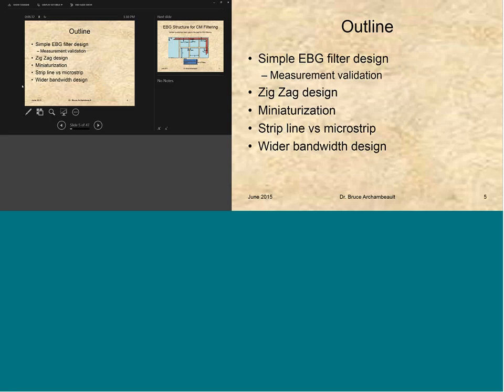These EBG filters I'll be talking about today, we can design these in advance with some very simple formulas to come up with the common mode filtering that we want. So today, I'm going to start out with the simplest EBG filter design and show some measurement validation, and then we'll go into some kind of specialized designs, the zigzag design to reduce the amount of space needed, miniaturization, again, to reduce the amount of board space needed, and then talk about both strip line and microstrip, as well as how can we widen the bandwidth of the notch filter here.